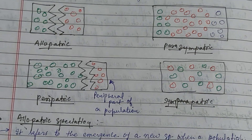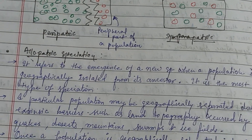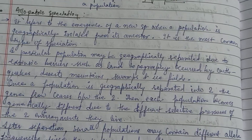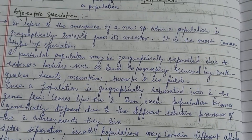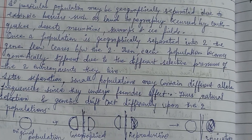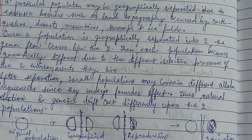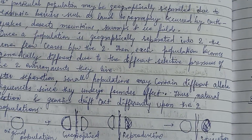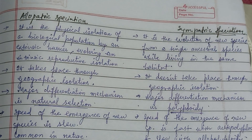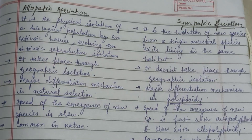Allopatric speciation is the emergence of a new species when a population is geographically isolated from its ancestor, and it is the most common type of speciation. In this figure, there is an original population with a geographical barrier in which reproductive isolation occurs, resulting in new species formation.